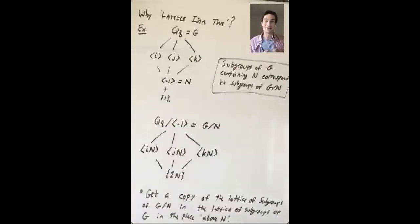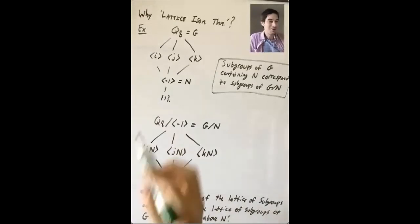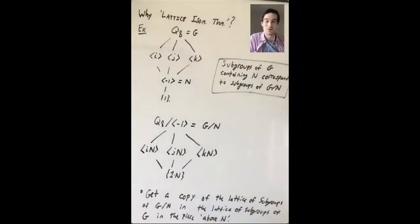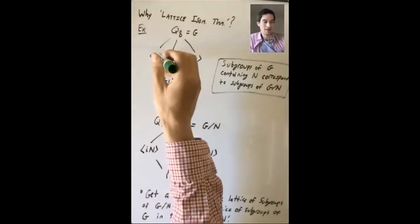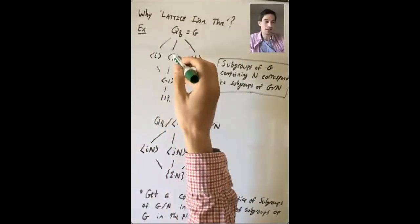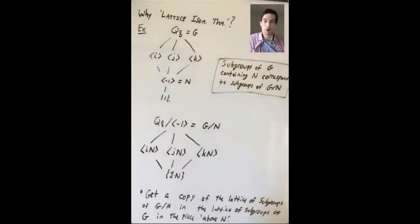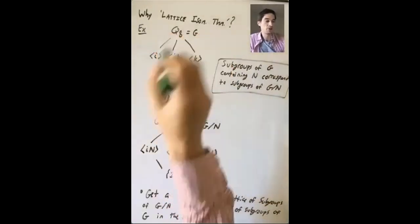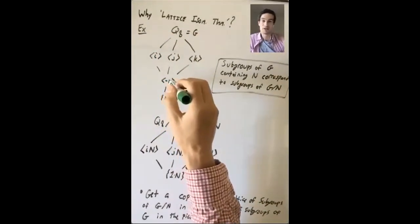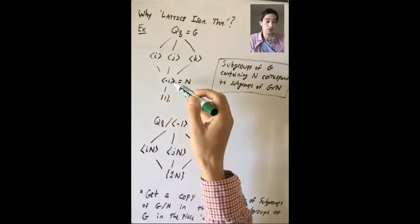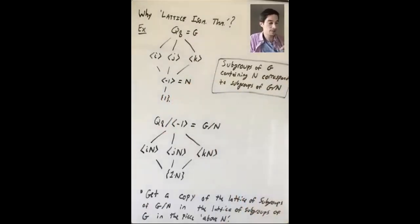The last thing I want to do is explain why the fourth isomorphism theorem is often called the lattice isomorphism theorem. Let's take the lattice of subgroups of Q8, the quaternion group of size eight. It has the subgroup generated by i, by j, by k — these all have size four and are the index-two subgroups. We have the subgroup generated by minus one, which has size two — this is the center of Q8. And then we have the trivial subgroup at the bottom.